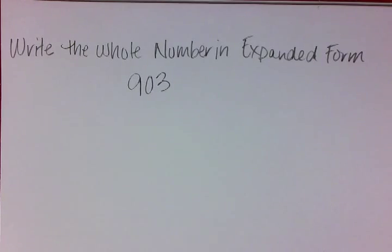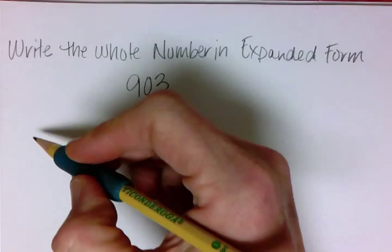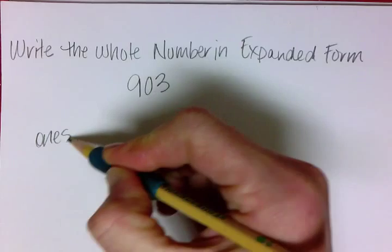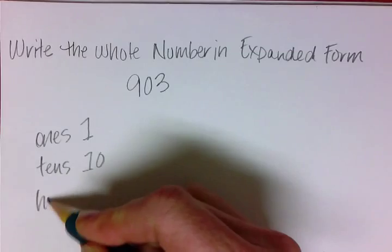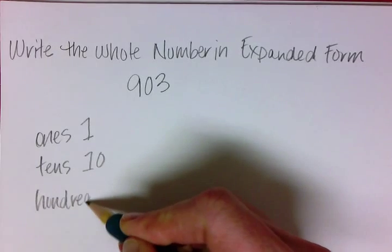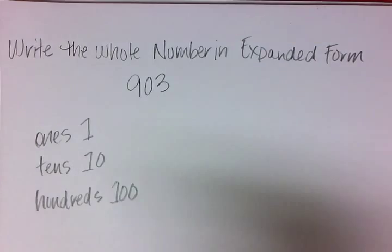So what this question wants to know is if we understand places in numbers. And we know that we have ones, and tens, and hundreds, and so on. Thousands.